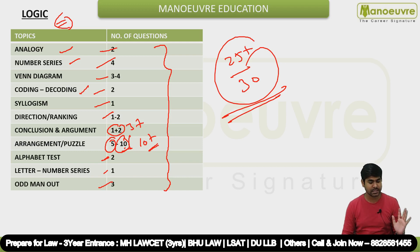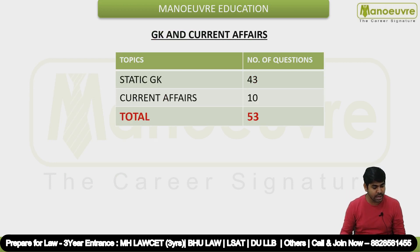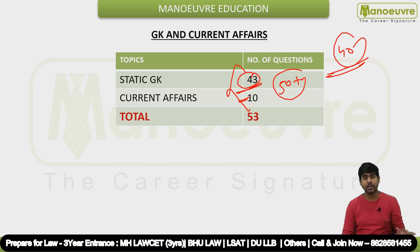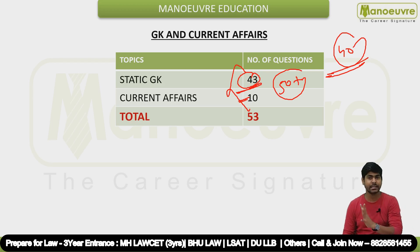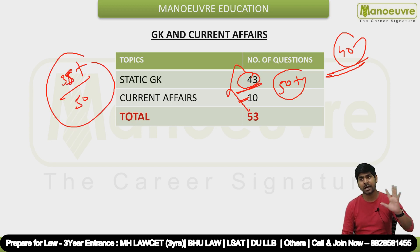Next is GK and Current Affairs. This year static GK questions were more and legal aptitude questions were reduced. Static GK had approximately 40-43 questions, current affairs had 10 plus questions - overall 50 plus questions. The current affairs section this year had a weightage of 40 questions, but since the paper was in jumble format questions were more here. Those who did PDFs, mock tests, and lectures well will score here. GK was quite easy this year - it's the first time CLAT has asked such an easy GK section. Out of 50, I strongly say 35 plus is achievable with good preparation.